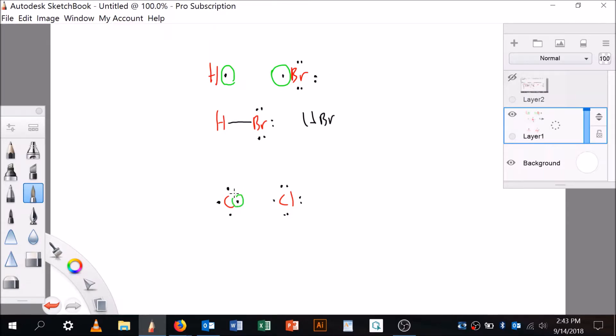so it looks like carbon's going to want to make four bonds and chlorine's going to want to make one, right? So it looks like what we're going to get then is carbon is going to be here. And chlorine is going to be there. And it's going to look like that, okay?